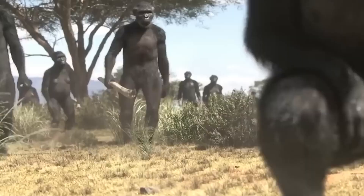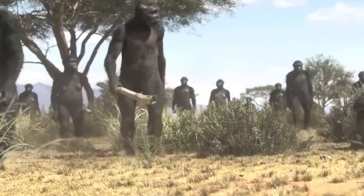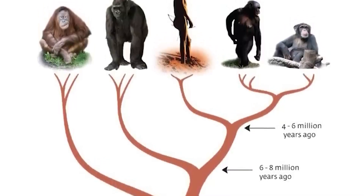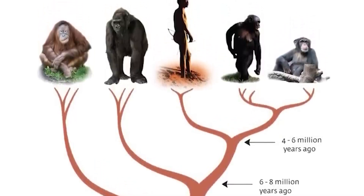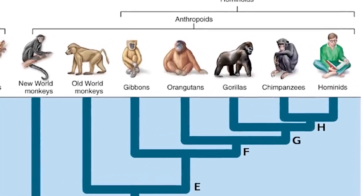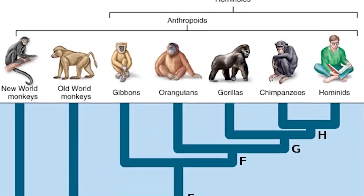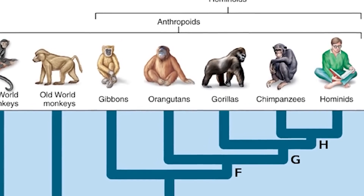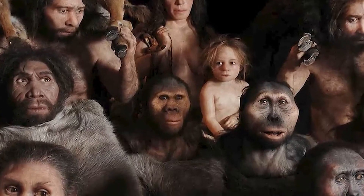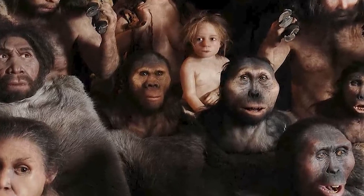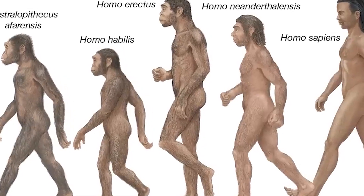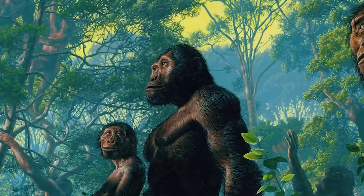Evolution theory suggests that all living things have a common ancestor and have changed over time. This change occurs in a process known as natural selection. Natural selection is based on competition among members of a species to adapt to their environment and the transfer of genes from those with a higher chance of surviving and reproducing to the next generation. This process can lead to one species becoming different from others over time and new species emerging.